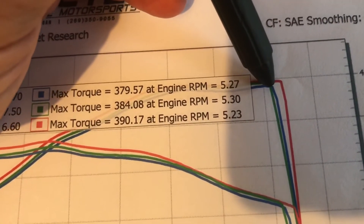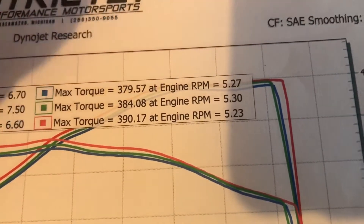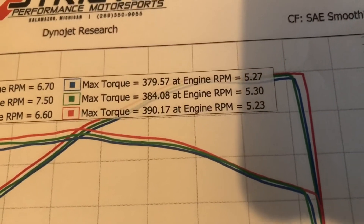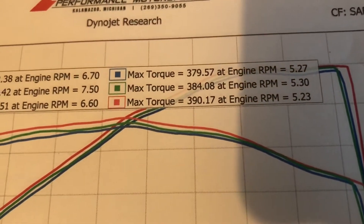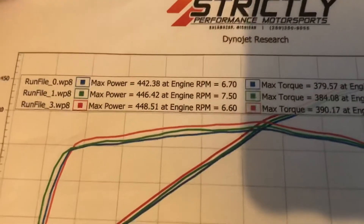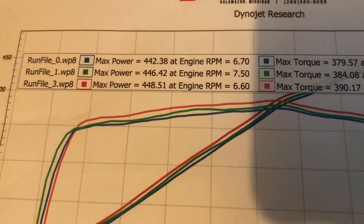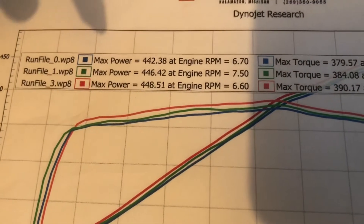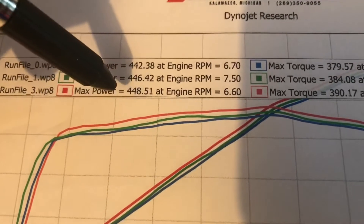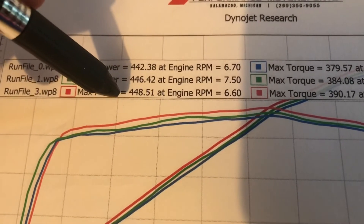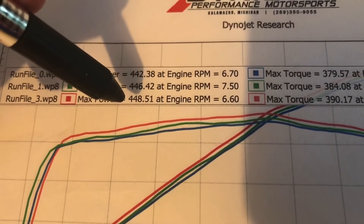The runs are all close. I asked them to run to 7,600, but the red run was taken to 7,800. We let it cool down for quite a while — they had a little issue with the computer reading — and once that was fixed we went back up and ran it out to 7,800, which is where my redline is set.